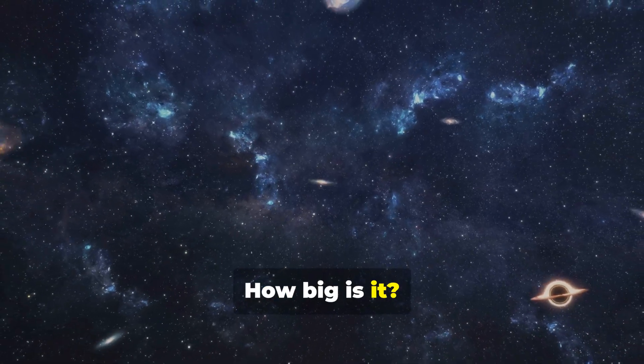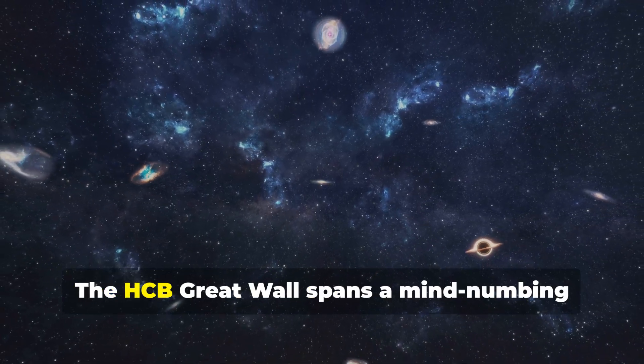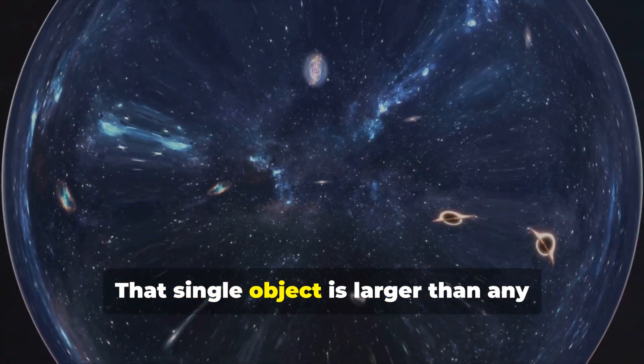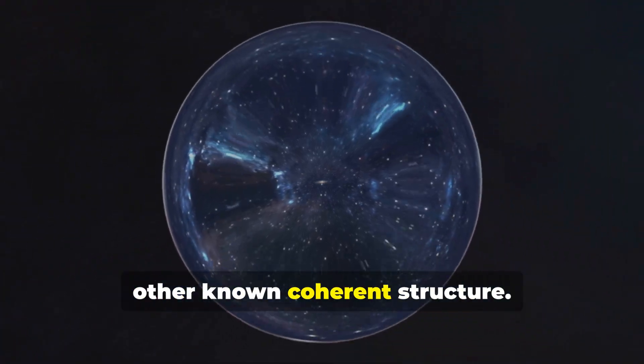How big is it? Prepare yourself. The HCB Great Wall spans a mind-numbing 10 billion light years across. That single object is larger than any other known coherent structure.